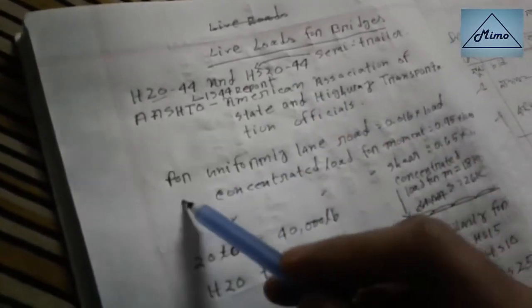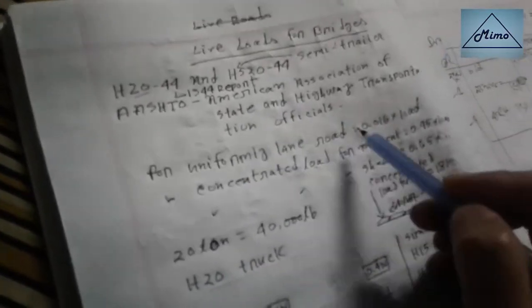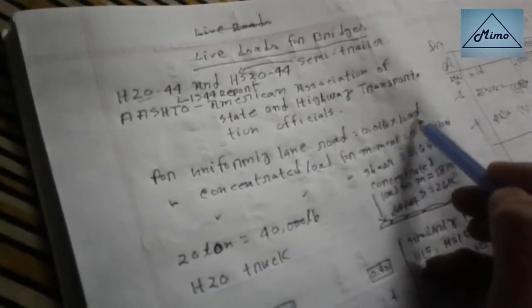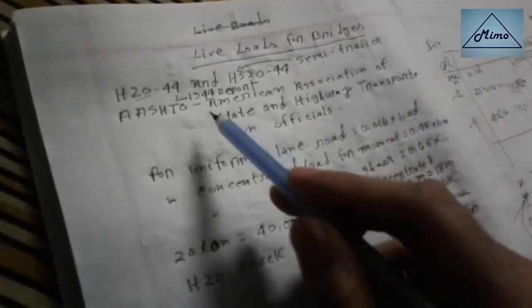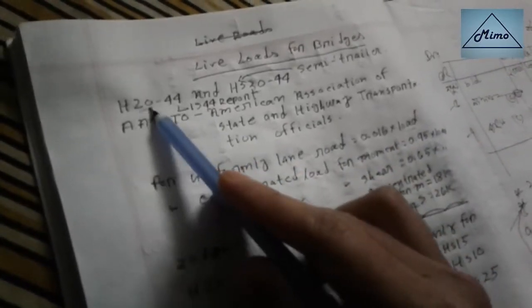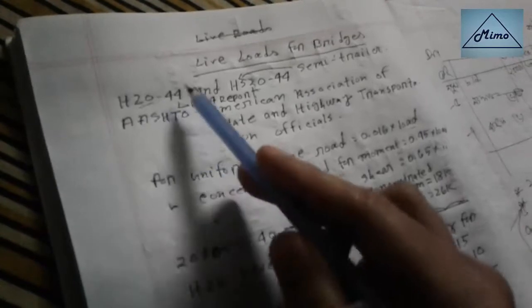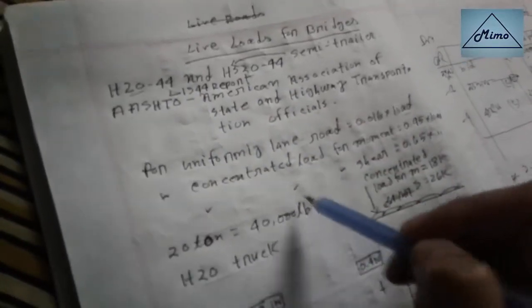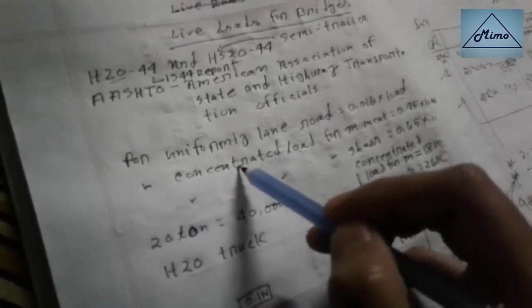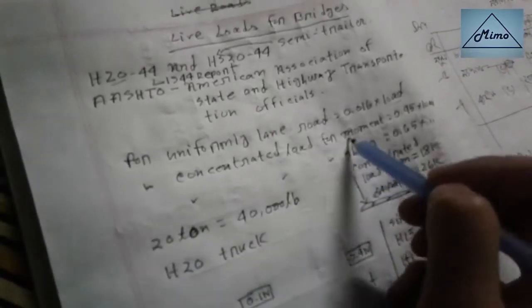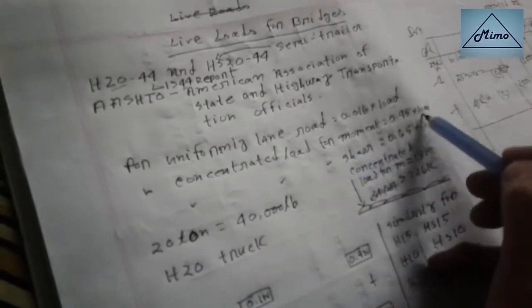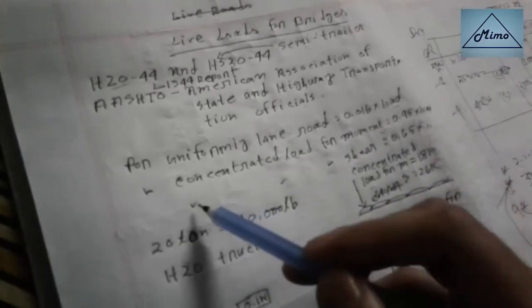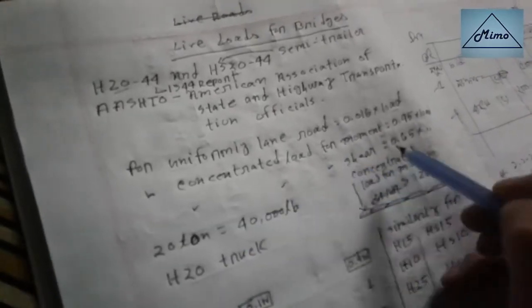For uniformly distributed lane load, it is 0.016 times the total load. The total load means 20 tons, or 40,000 pounds. For concentrated load for moment, it is 0.45 times the total load. For concentrated load for shear, it is 0.65 times the total load.